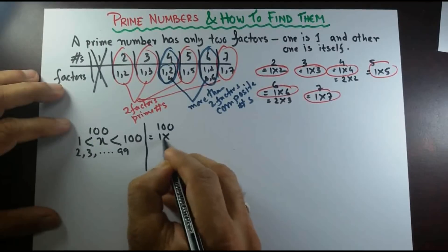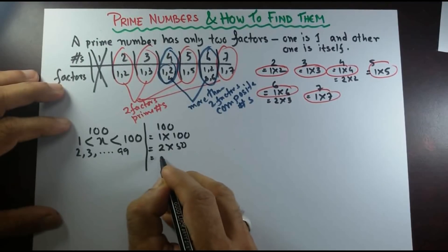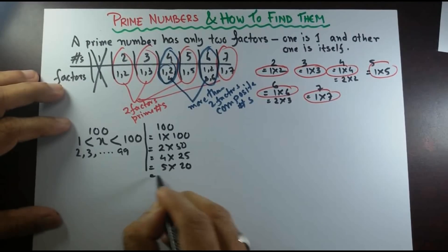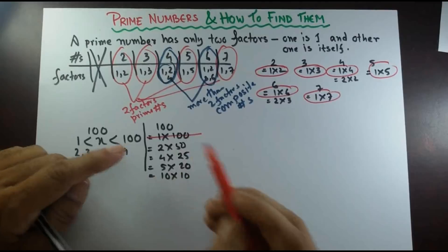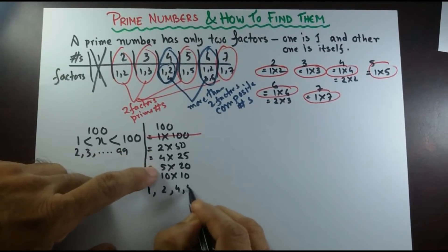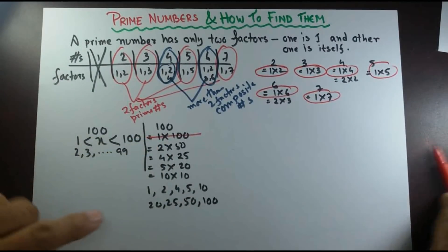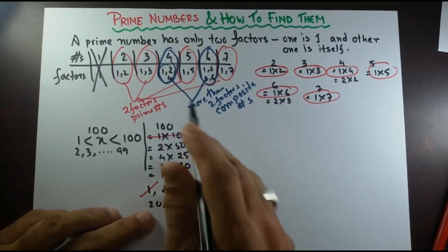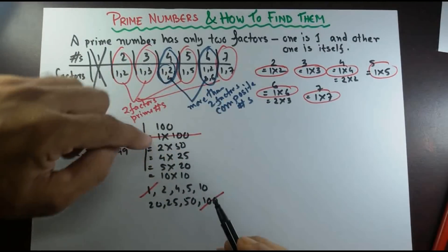All the factors of 100: 1 times 100, 2 times 50, then 4 times 25, 5 times 20, and 10 times 10. So all the factors of 100 are 1, 2, 4, 5, 10, 20, 25, 50, and 100. We cancel out 1 and 100. If any one of these numbers divides 100, then 100 is not a prime number — since it already has more than two factors, it's going to be a composite number.